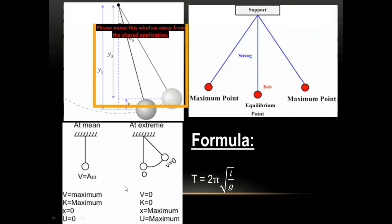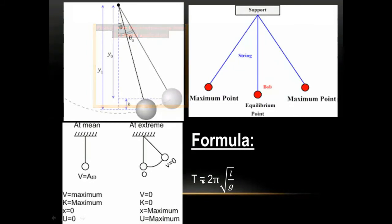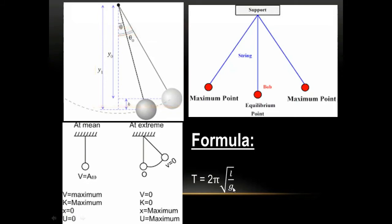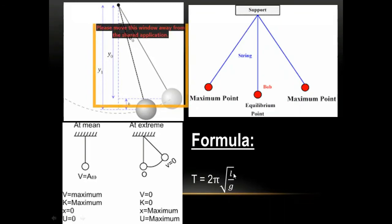The motion of a simple pendulum is confirmed as simple harmonic motion. The formula for the time period of a simple pendulum is T = 2π√(L/G), where T is the time period, π is a constant (≈ 3.14 or 22/7), L is the length of the pendulum (from point of suspension to the center of the ball), and G is the acceleration due to gravity. Pi and G are constants, so T depends only on L.